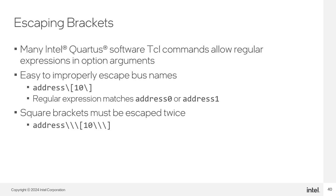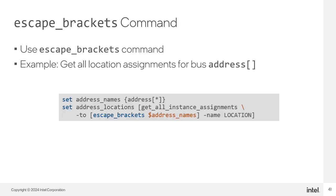You must correctly escape square brackets for bus names. For example, address\[10\] can be interpreted as a regular expression matching address0 or address1. If you intend to match bit 10 of the address bus, square brackets must be escaped twice using three backslashes — the first backslash escapes the second, and the third backslash escapes the square bracket. The miscellaneous package provides the escape_brackets command for convenience. For example, to get all location assignments for wires in a bus named address, set the address names using curly braces to prevent command substitution, then use get_all_instance_assignments with escape_brackets for the correct level of escaping.